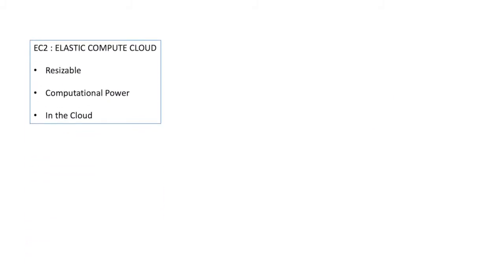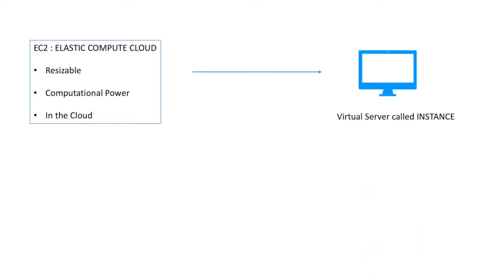First of all, we will see what EC2 stands for. EC2 means Elastic Compute Cloud. Elastic means it is going to provide you resizable computational power in the cloud. You can do your computations or any kind of operations and resize it the way you want. If you need less power, you will get less. With this service, you will get a virtual server. In AWS terms, this is called an instance.